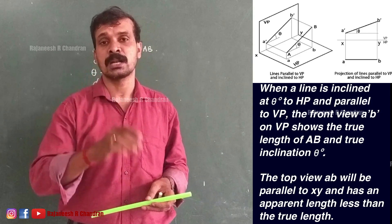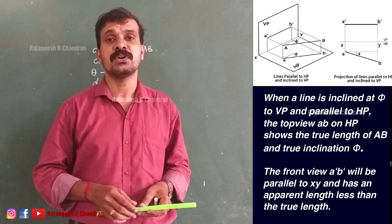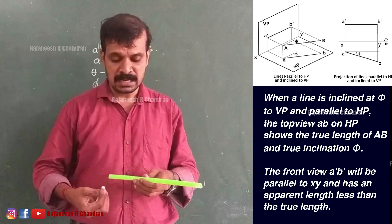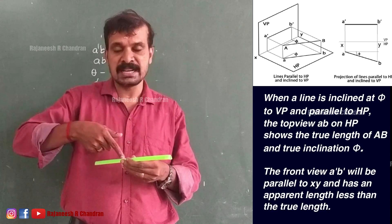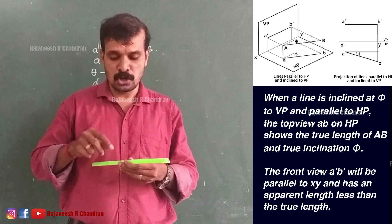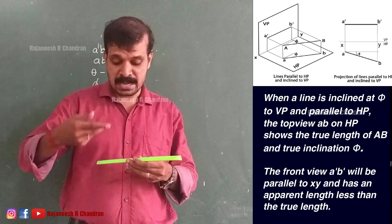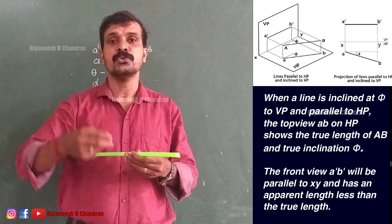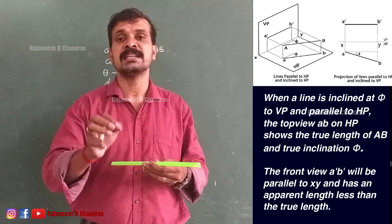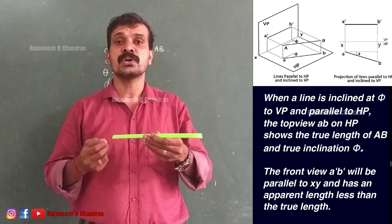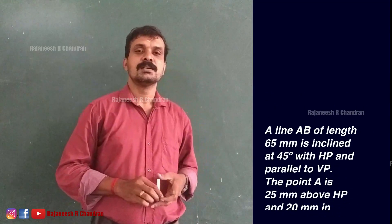Now you can see the physical position of a line AB which is inclined at an angle phi with VP. The line AB is inclined at angle phi with VP and parallel with HP. So in the top view you can see the true length, inclined at angle phi with respect to the XY line — that is the true inclination of the line. In the front view you can see a'b' which will be parallel to the XY line and of shorter length.